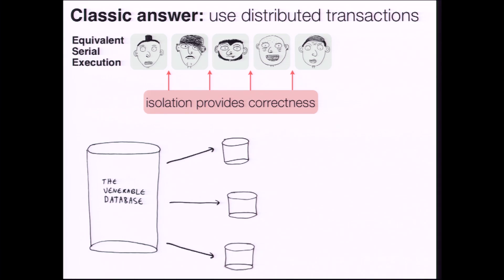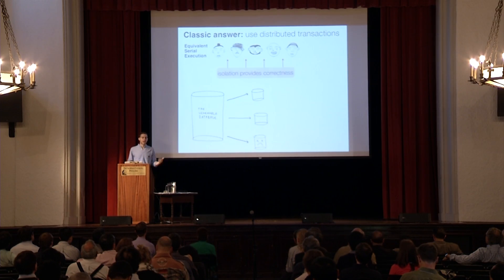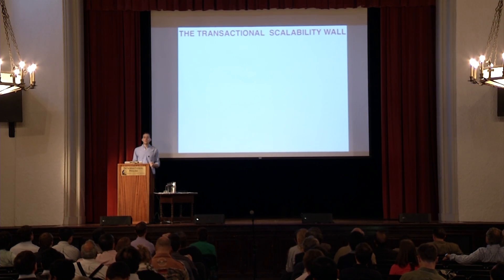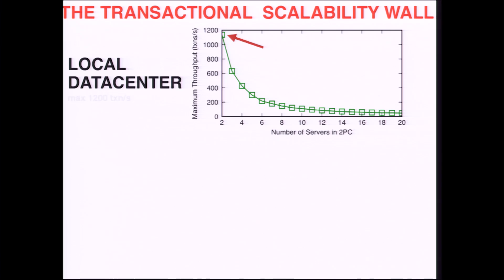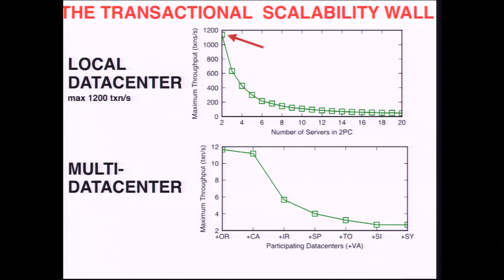But if we're running twitter.com, we need a lot of databases to spread data across and also replicate across. And when this happens, we run into what I'll call the transactional scalability wall. Fundamentally, under worst-case access patterns, if we provide these nice isolated semantics, in a local data center we cap out around 1,200 transactions per second per data item. In a multi-data center context — say replicating between Oregon and Virginia — we're looking at around 12 transactions per second per item.